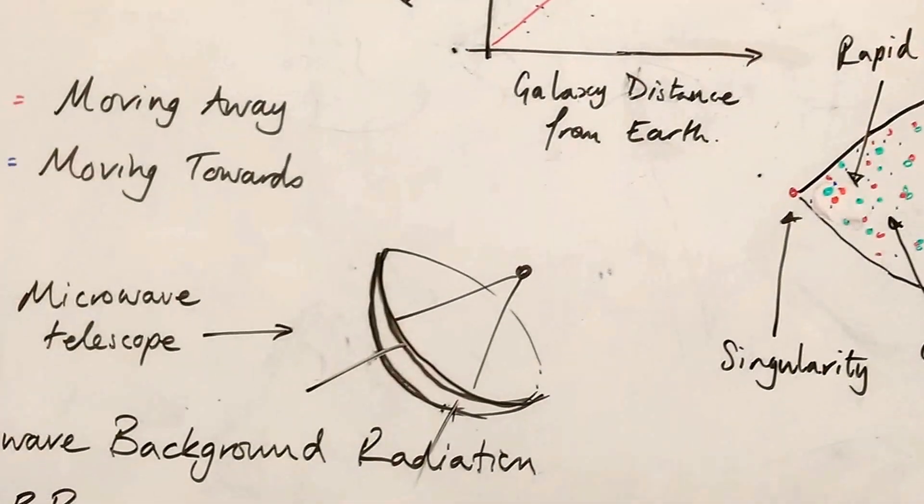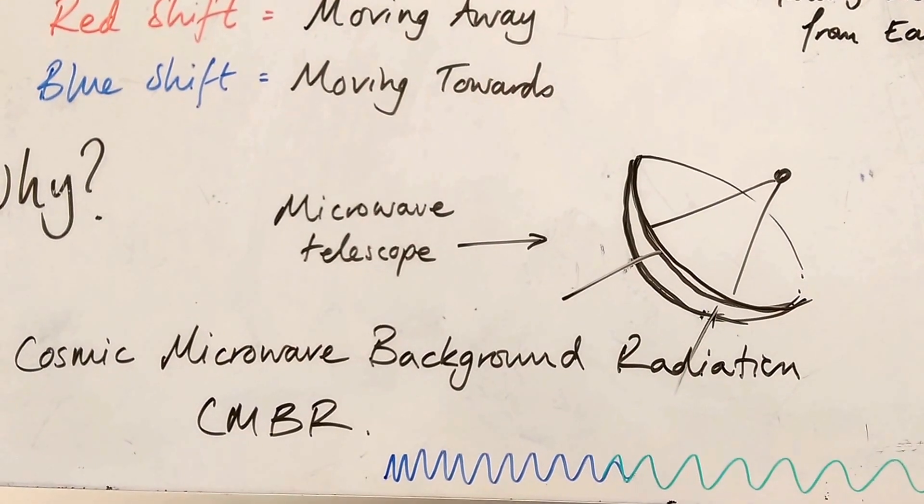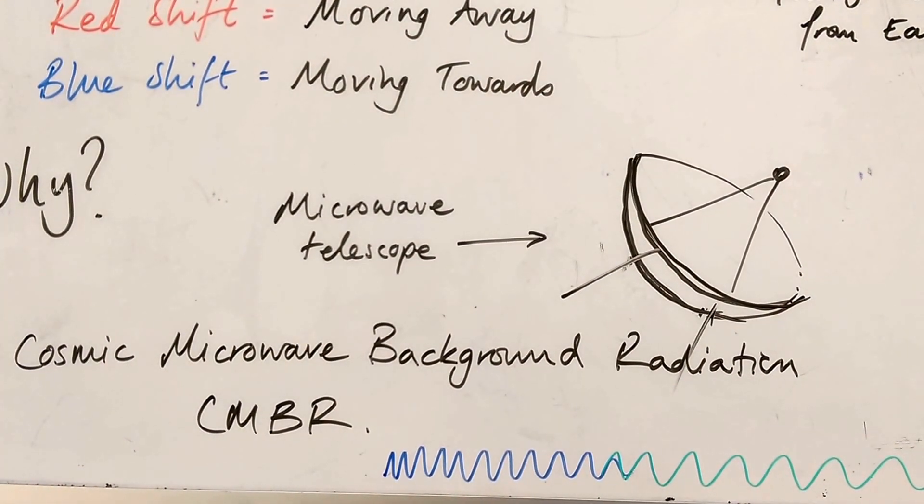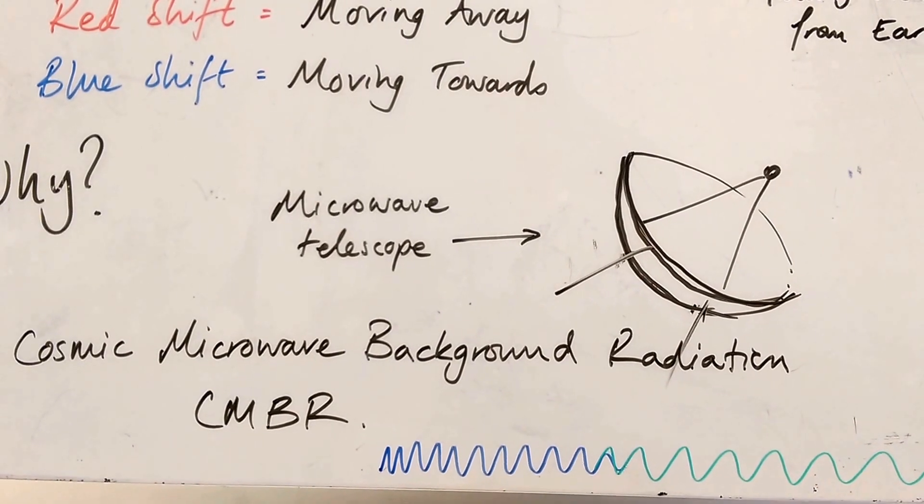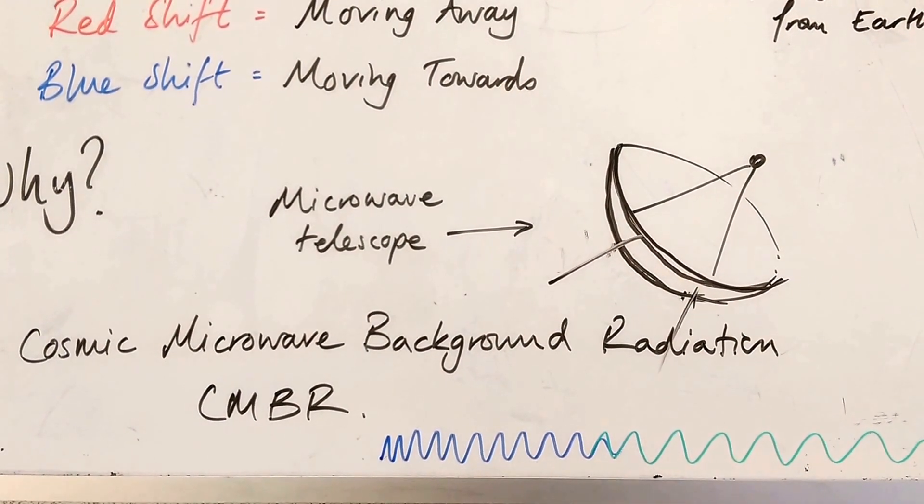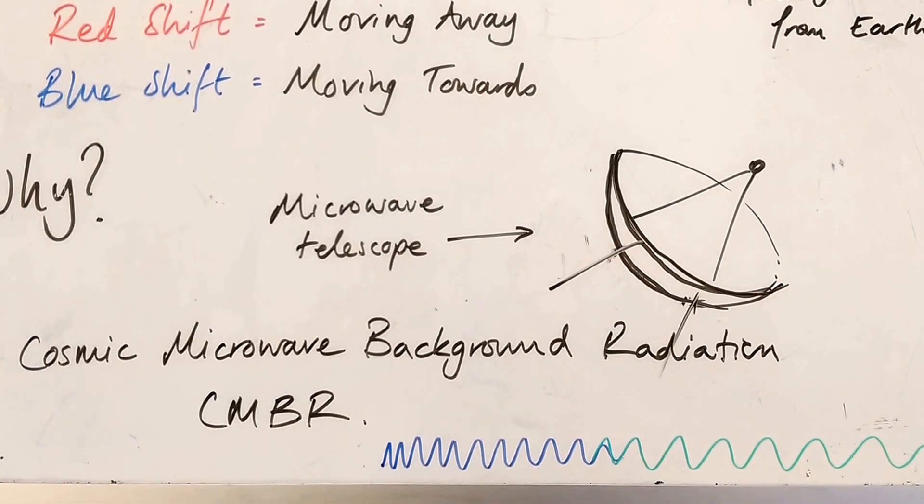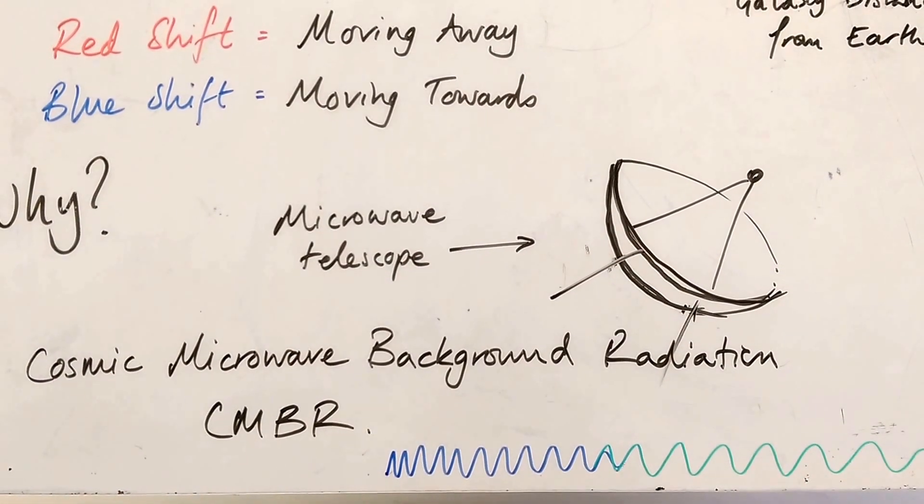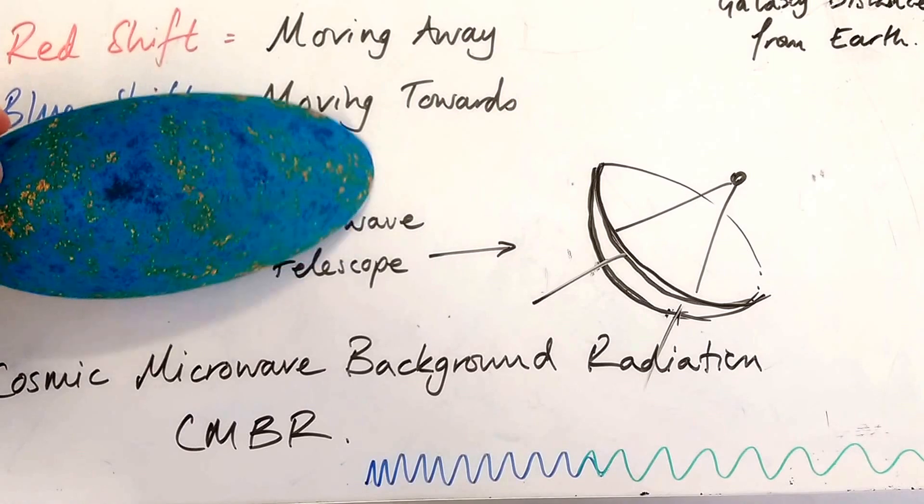Well, it was just a theory, until, accidentally really, two gentlemen, studying with their microwave telescope, found something, found a background signal. And we call this background signal, the cosmic microwave background radiation.